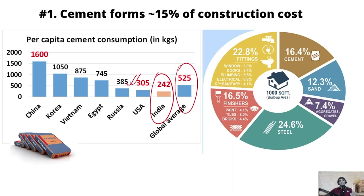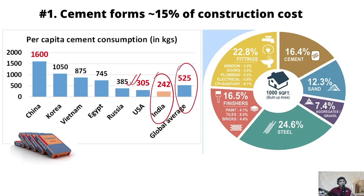But for countries like China, Korea, and Vietnam where a lot of their infrastructure development has happened in the last two to three decades, the number can be as high as around 800 to 1500 kgs per capita consumption. So in India, since the expectation is that in the next two to three decades we are going to improve our infrastructure, there is room for this number to grow.